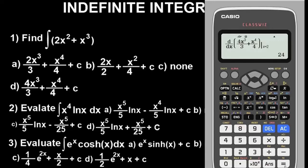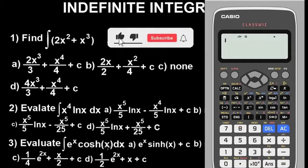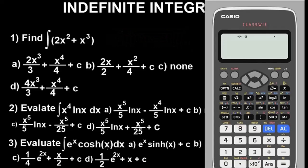That's question 1 done. Now for question 2, which involves a hyperbolic function — very important, so don't miss this. We are asked to evaluate the integral of x to the power of 4 times ln(x).